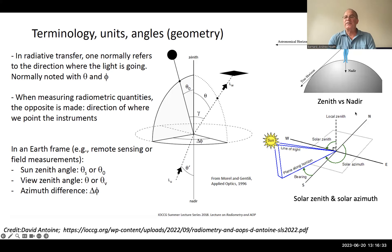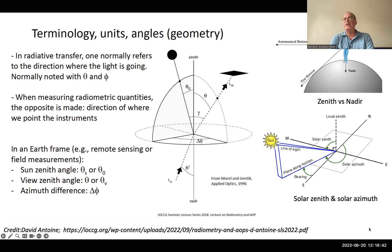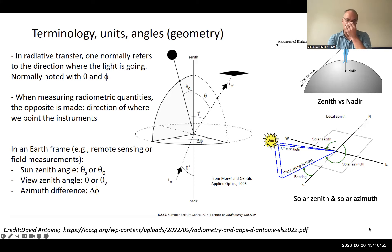You'll also hear the term nadir angle, which is basically the opposite direction to the zenith — zenith going upward into the sky, nadir meaning coming down to the ground. In satellite terms, you'll more often hear the nadir definition or nadir terminology.